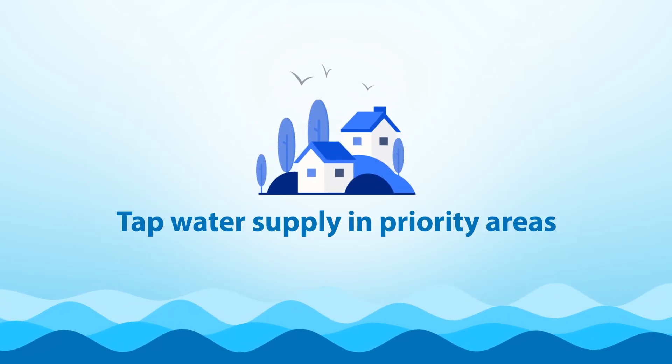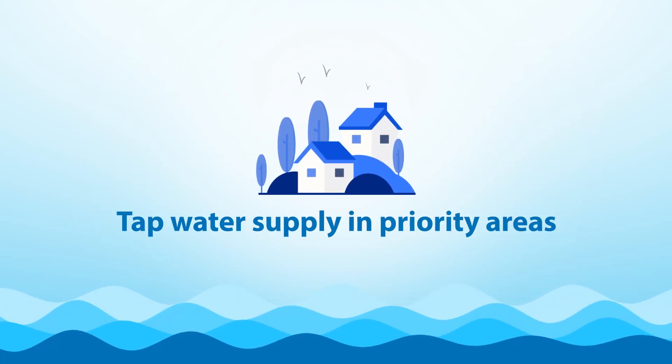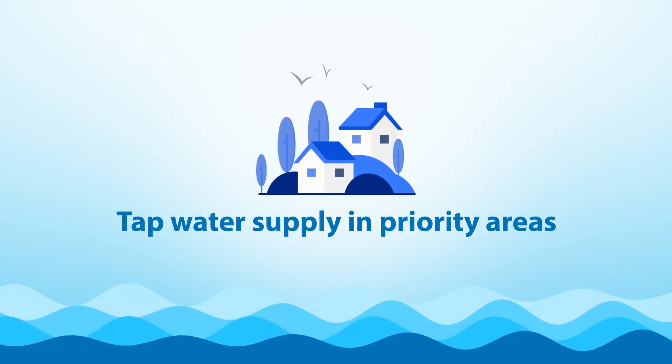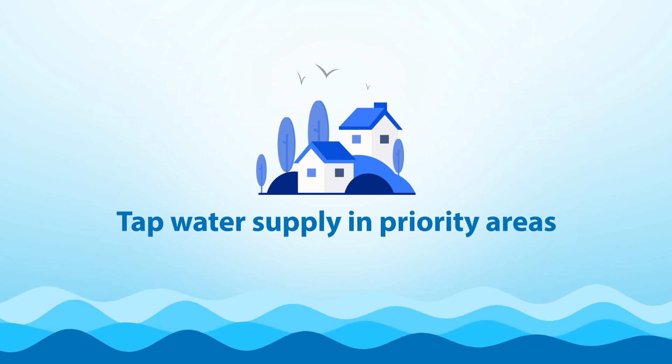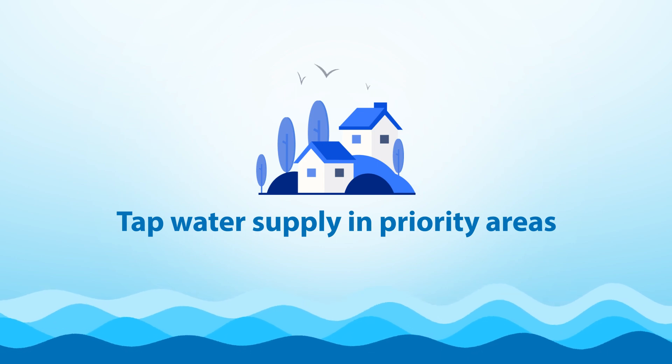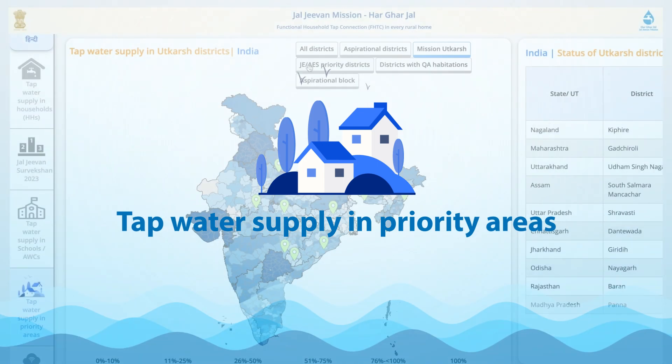This video talks about the information available on tap water supply in the Priority Areas tab on the JJM Dashboard.